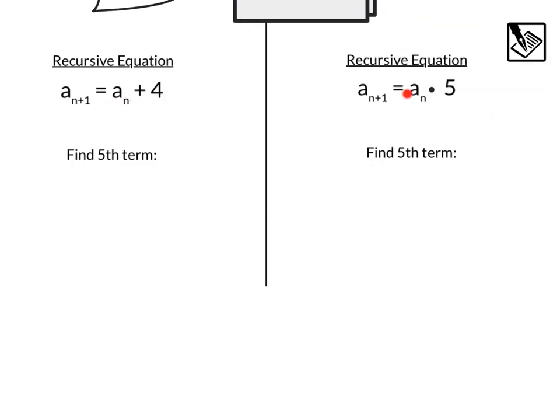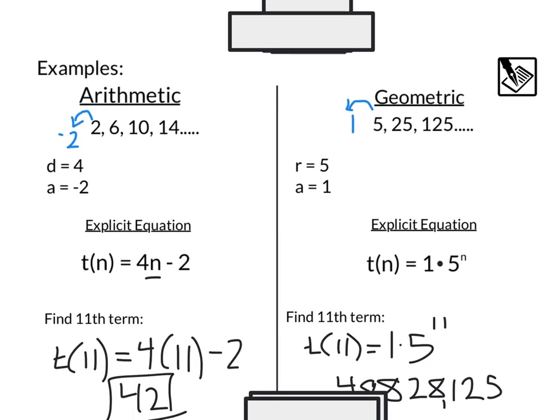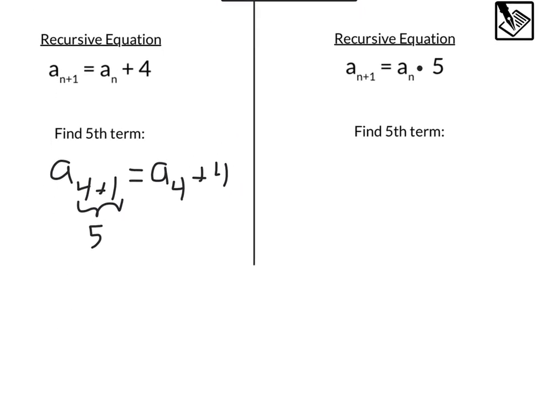Notice we don't use the zeroth term here, but when we use these equations, we do need to find the term before. So for example, if we want to find the fifth term, that would be a(4+1), because that 4 plus 1 is 5, and that's going to equal the a(4) term plus 4. If we look back at our sequence, we need our fourth term. It looks like our fourth term in this sequence is 14. So we can substitute 14 in for the fourth term. That would be equals 14 plus 4, giving us a fifth term of 18.